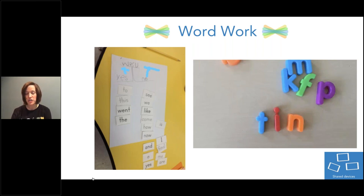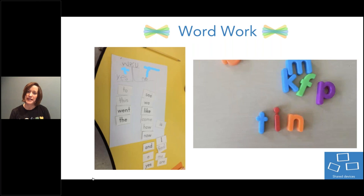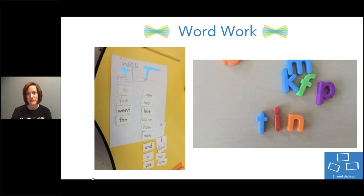On the left, students are using sight words, sorting them, and they've drawn their own thinking map — a tree map. They used Seesaw to snap the picture, annotate how they sorted it — T and not T — and then read their words. On the right is an example that links to Seesaw activities: a word-building activity where students use hands-on materials to create and make words, and then use Seesaw to take a photo and read those words.